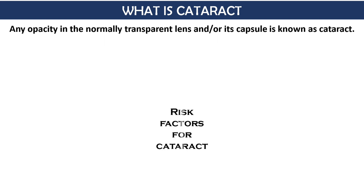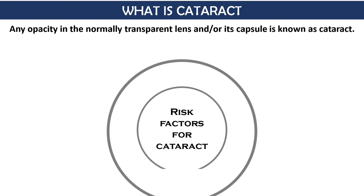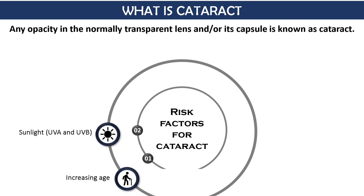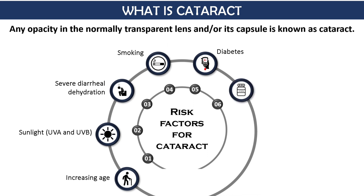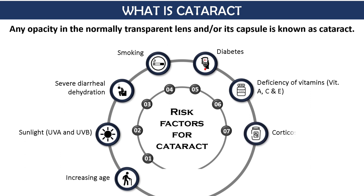Some risk factors for cataract are: first, increasing age; next, sunlight, especially the UVA and UVB components; then severe diarrheal dehydration; smoking; diabetes; vitamin deficiency, especially vitamins A, C, and E; and then corticosteroids and genetics.